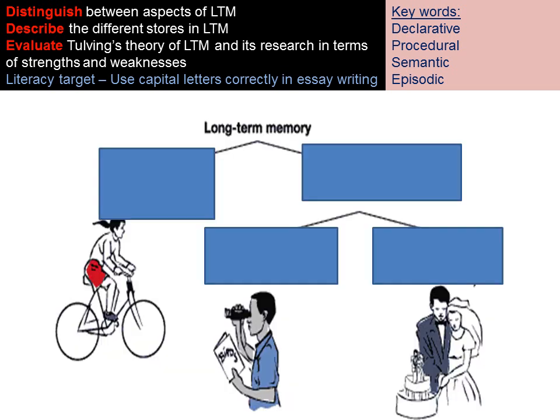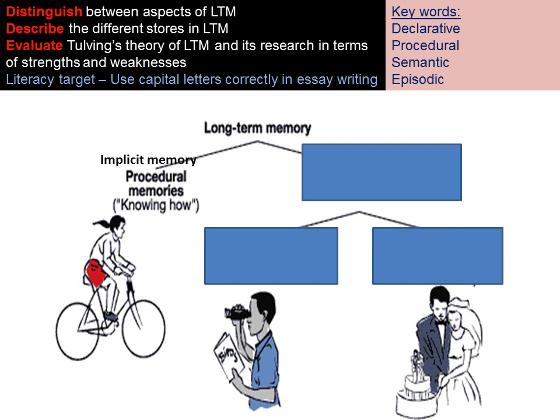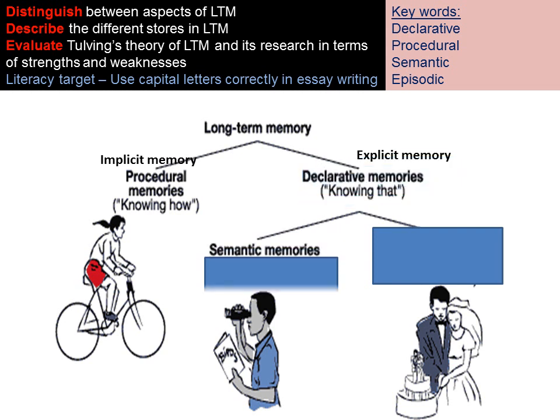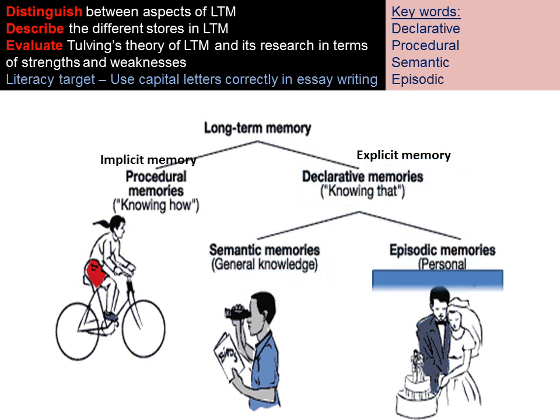Using the names as triggers: procedural memories are the procedures for things, so knowing how to do things such as skills for riding a bike. Semantic memories relate to general knowledge — facts. And episodic memories are about episodes, so personal recollections of events within our life.